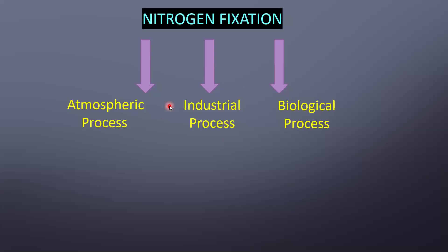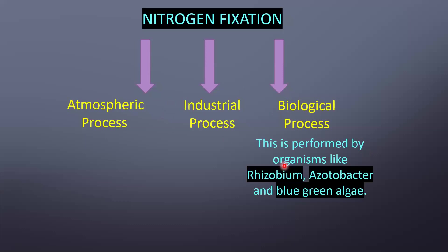In the biological process — 'bio' meaning living things — we use organisms to convert nitrogen into nitrate and nitrite. This is performed by organisms like Rhizobium, Azotobacter, and blue-green algae. These organisms live in the soil and convert atmospheric nitrogen into nitrate and nitrite for you.